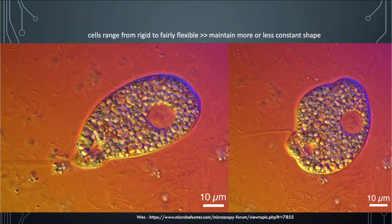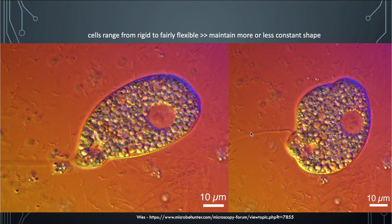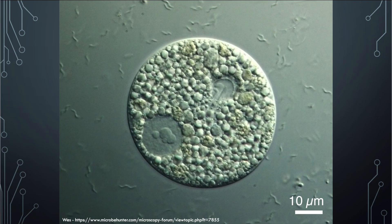A flagellate moving through liquid can elongate and contract as it moves. Cells can range from quite rigid to fairly flexible. Unlike an amoeba that can completely change shape by putting out pseudopodia, the flagellate maintains more structural integrity in terms of its shape — it can modify its shape to some extent, but not to the same degree as an amoeba.